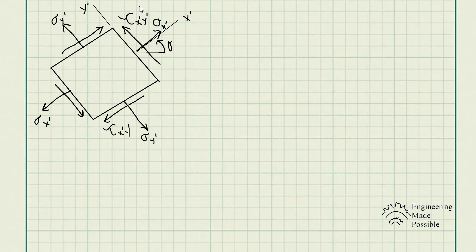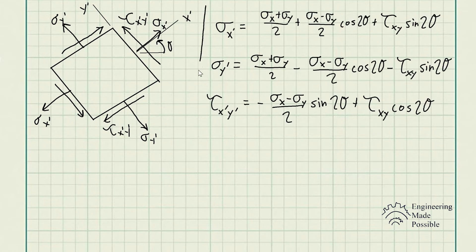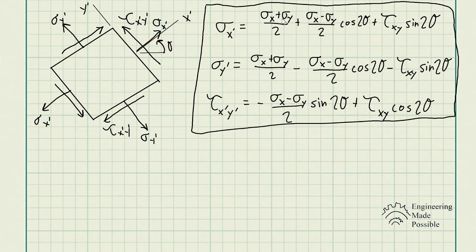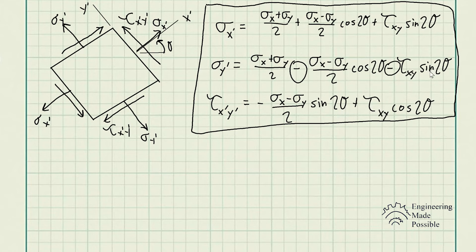There are equations to project stresses onto this new rotated element, which I will not derive, but here they are. Sigma X prime equals (sigma X + sigma Y)/2 + (sigma X − sigma Y)/2 · cos(2θ) + tau XY · sin(2θ). Sigma Y prime is similar but with subtraction instead of addition for the second term. Tau X prime Y prime equals −(sigma X − sigma Y)/2 · sin(2θ) + tau XY · cos(2θ). These are the equations for stress transformations.